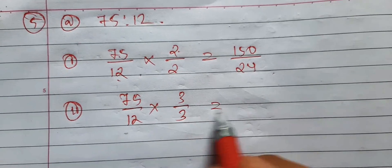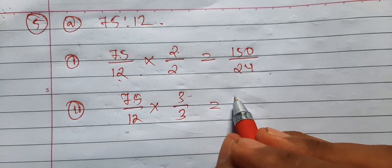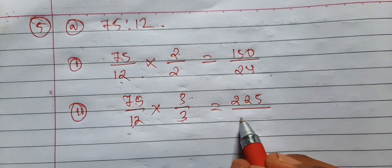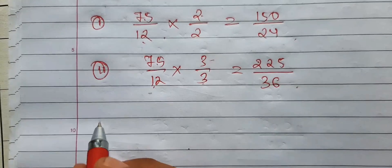You can take 3. So 75 into 3 is 225, and then 36. Now here another one.